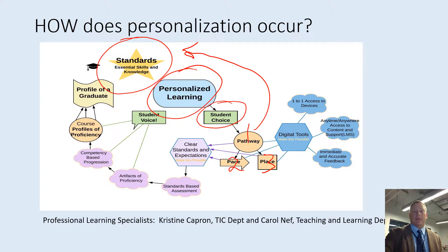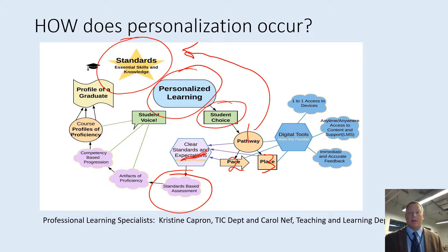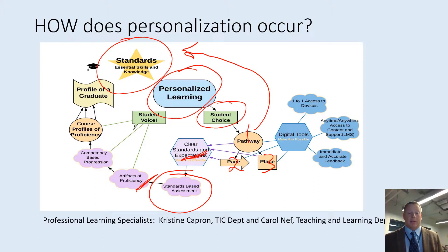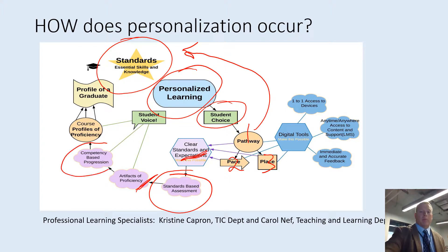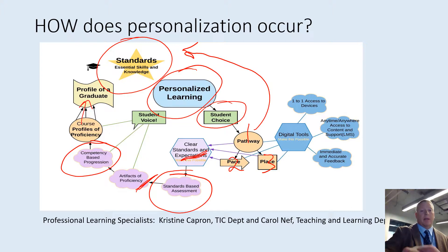But we can't do any of those things if we haven't clearly described or defined what standards we have for those students. Once we've clearly defined the standards, we need to describe how we'll assess their progress towards those standards. We want to provide authentic forms of assessment in which students provide artifacts that demonstrate their proficiency, and then let them progress at their own pace. As they do that through courses, we'll have profiles of proficiency for each course, and those come together to create a profile of what a graduate in our system should look like.